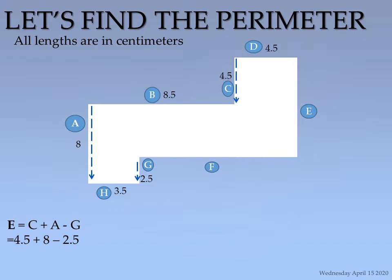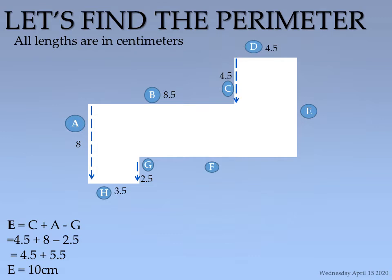So line E = 4.5 + 8 − 2.5. We need to take the excess on line G away. Doing the arithmetic, the answer is 10 centimeters. So line E is 10 centimeters.